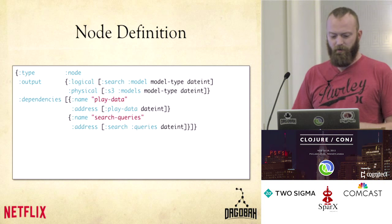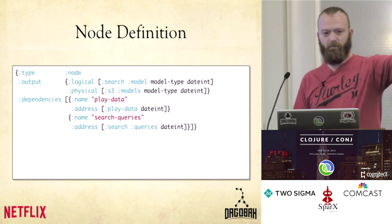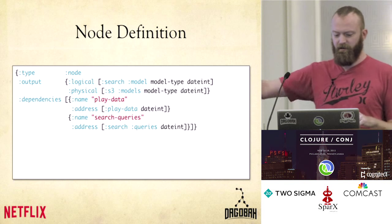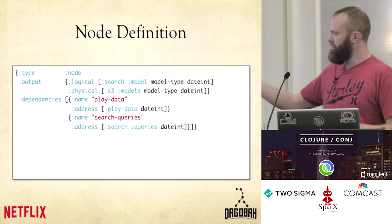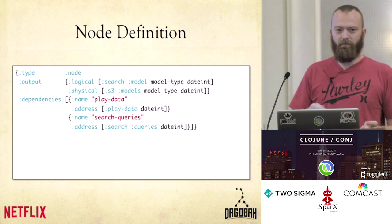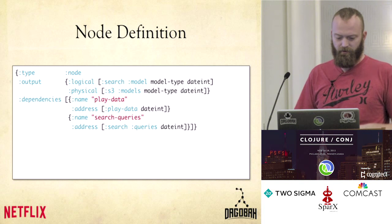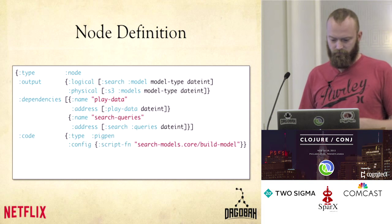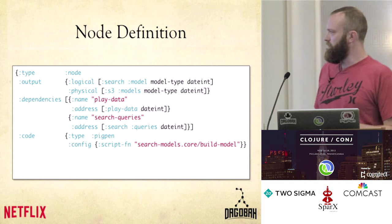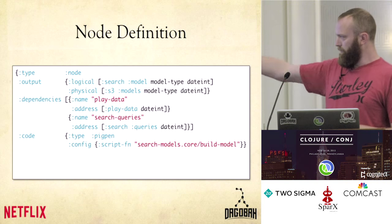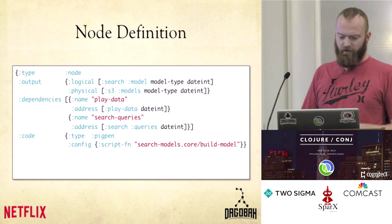There's a physical address mapping our different request parameters into a template that can be used to generate an S3 path or some other physical storage path. This is what Dagobah uses to figure out where to tell the node — the actual code that's running — where to write the actual data. We have dependencies: I'm saying I want to go get this other data first — give me play data for that date and search queries for that date — and just give them friendly names so when I'm in my code I can refer to them by those names.